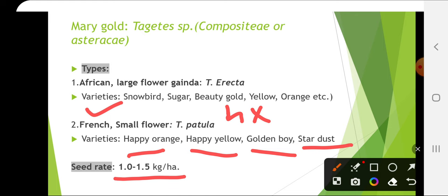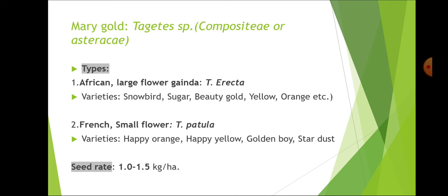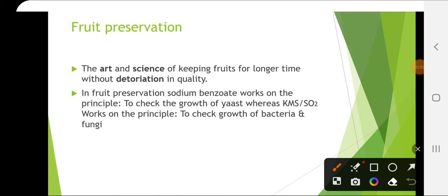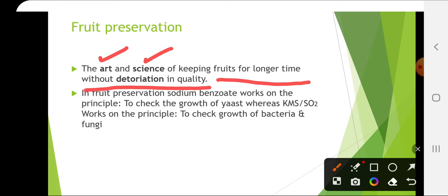Now the post-harvest management — fruit preservation — is done to increase the shelf life of the commodity, keeping fruits for a longer time without deterioration in quality. Sodium benzoate works on the principle of checking the growth of yeast, whereas KMS (potassium metabisulphite) or SO2 works to check the growth of bacteria and fungi. Sodium benzoate is used for preservation of colored juices and KMS for colorless juices.